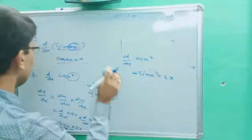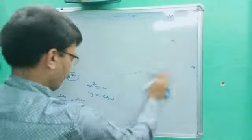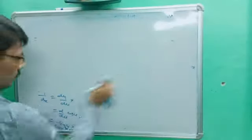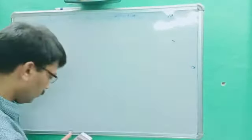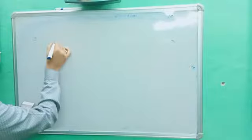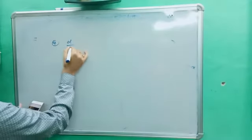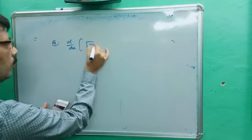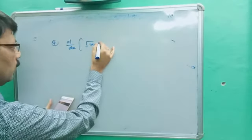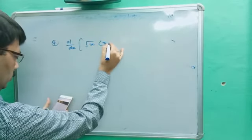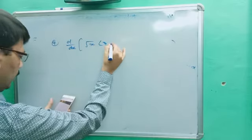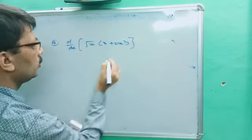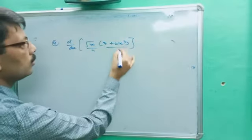Ninth question: d/dx of root x · (3 + 2x³). This is u times v.